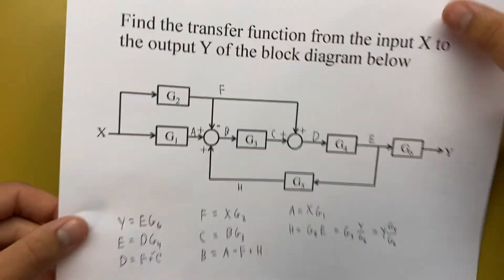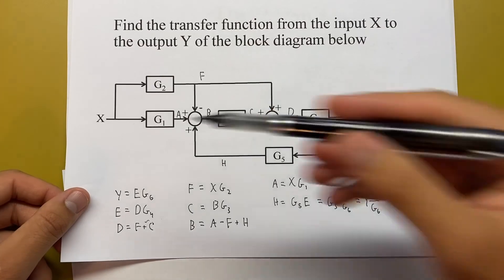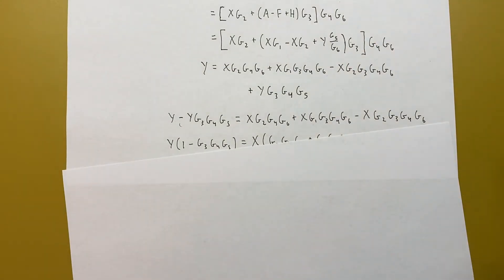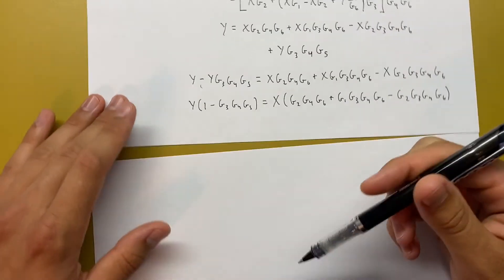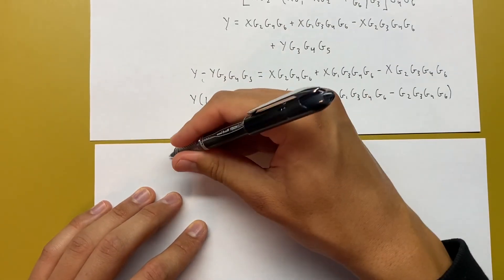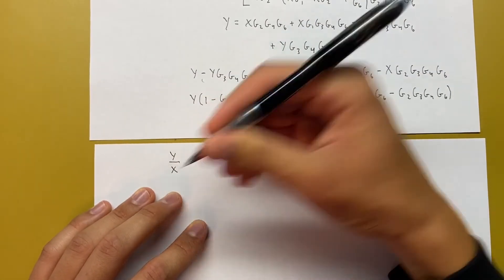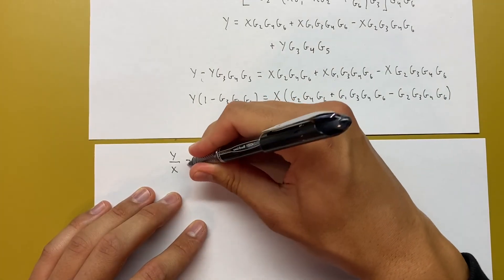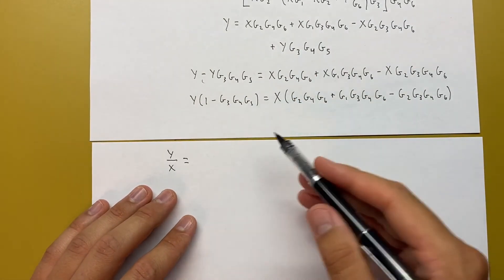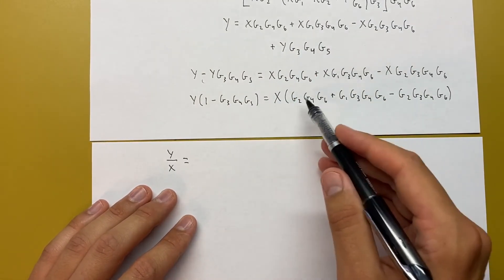If we look back at our original problem, we know that Y is the output, X is the input. So what we're looking for is going to be Y over X. We'll leave this on top, and then we'll divide by X here, and then divide by this part over there.